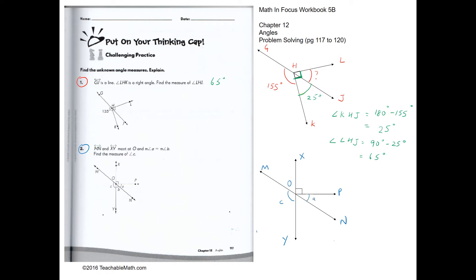We know that angle A equals angle B. From here, we know that this is 90 degrees, so therefore A plus B also has to be 90 degrees. Since angle A equals angle B, angle A has to be 45 degrees. So both A and B are 45 degrees.